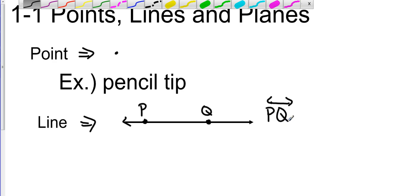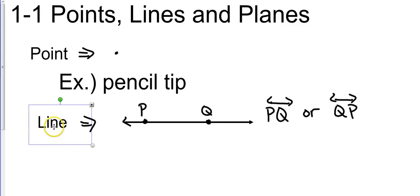It could also be labeled as line QP because a line is going to have the same distance, either direction or either orientation.